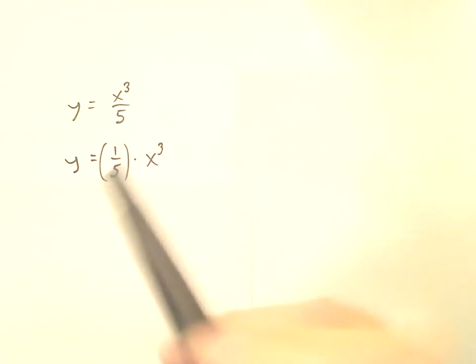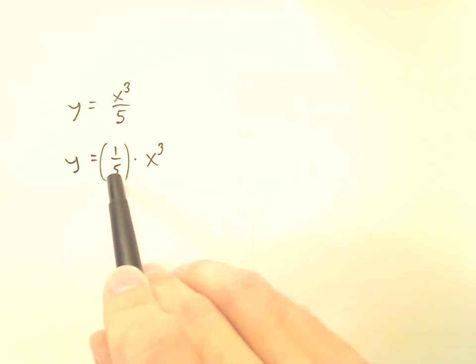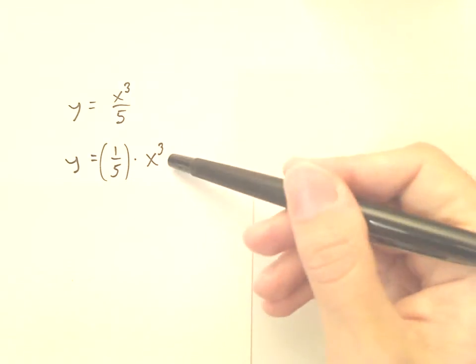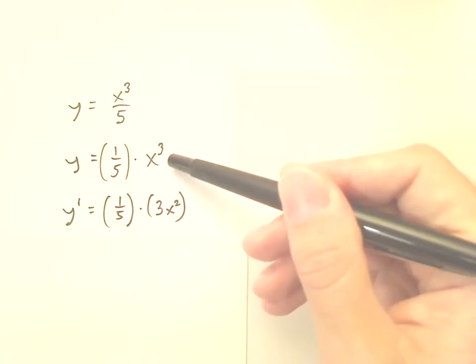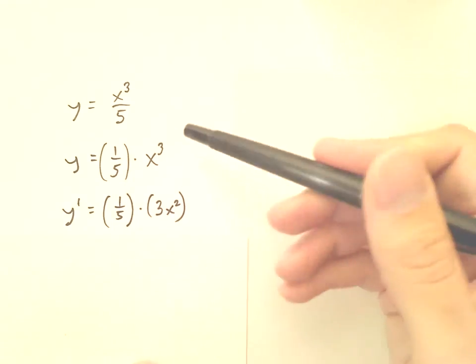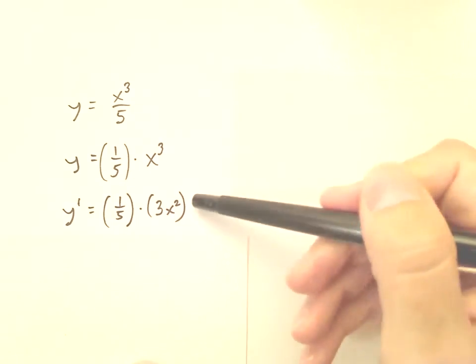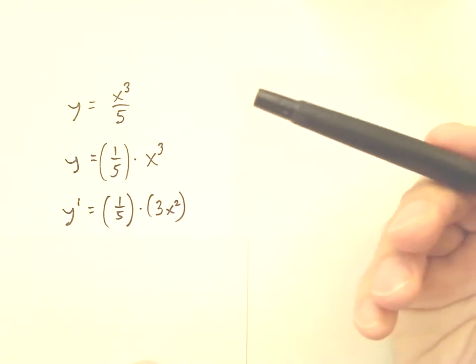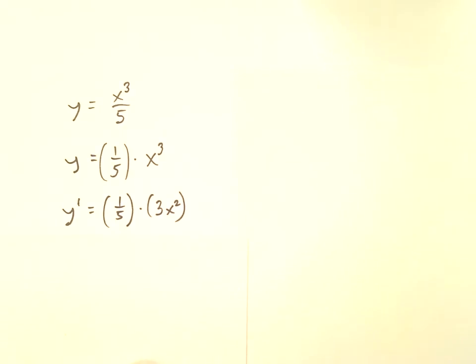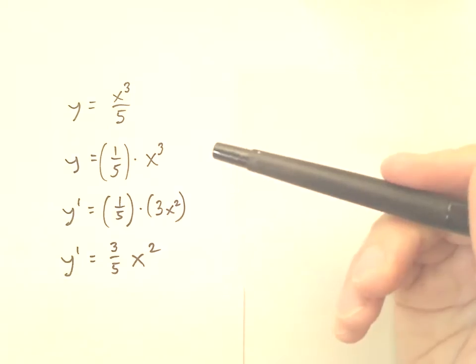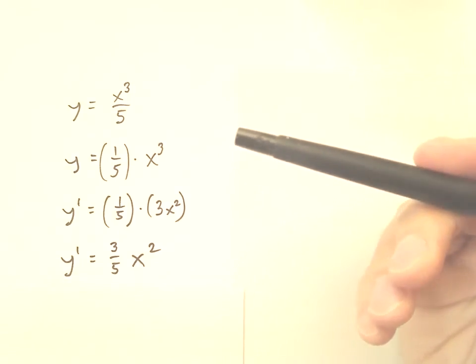The answer when you take the derivative will simply have this same constant coefficient, and it will be times whatever the derivative of x cubed is. So y prime equals 1/5, that doesn't change, times the derivative of x cubed, which is 3x squared, and you're done. You can tidy it up a little bit: 1/5 times 3 makes 3/5, but that's the answer.